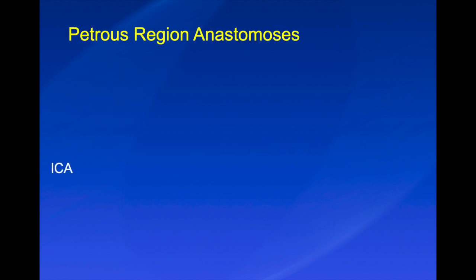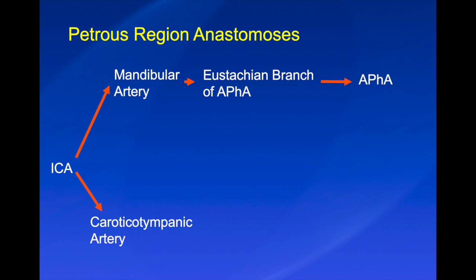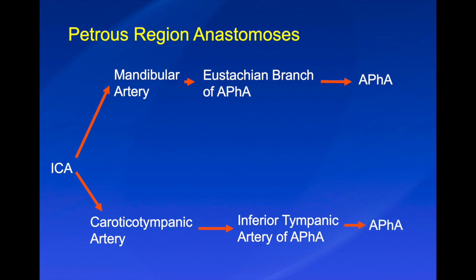For the petrous region anastomosis, our pathways include: the internal carotid artery to the mandibular artery to the eustachian branch of the ascending pharyngeal artery. Then the ICA to the caroticotympanic artery to the inferior tympanic artery of the ascending pharyngeal artery. And the vidian artery to the distal internal maxillary artery.